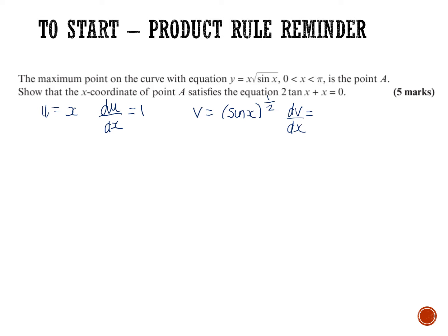Remember the chain rule — this is our function u to the half. Bring down the power, reduce the power by 1, so sine x to the minus a half. Then by the chain rule, times by du/dx. If I differentiate sine x I get cos x. So our differential of v is a half sine x to the minus a half times cos x.